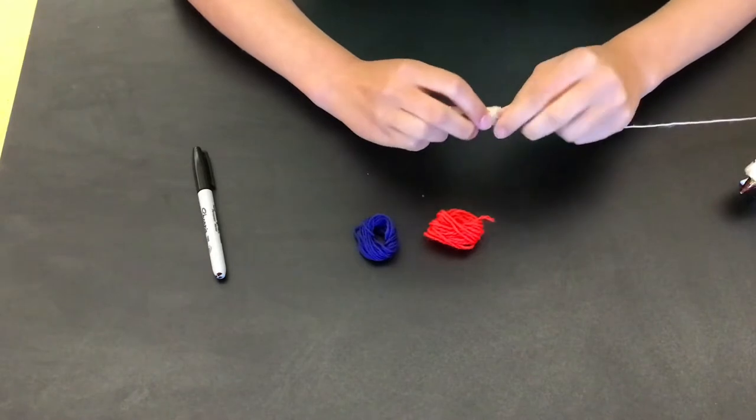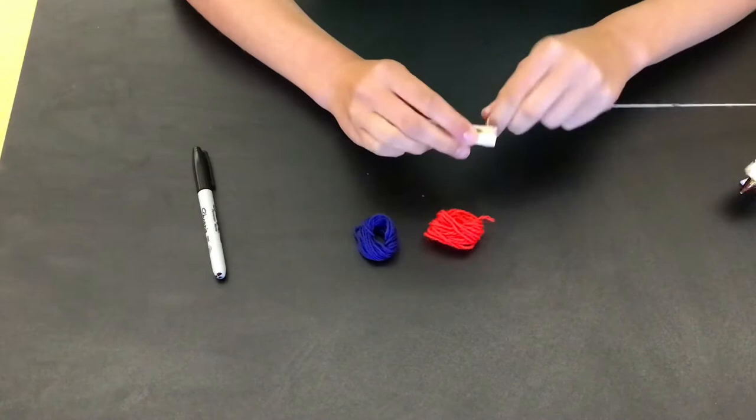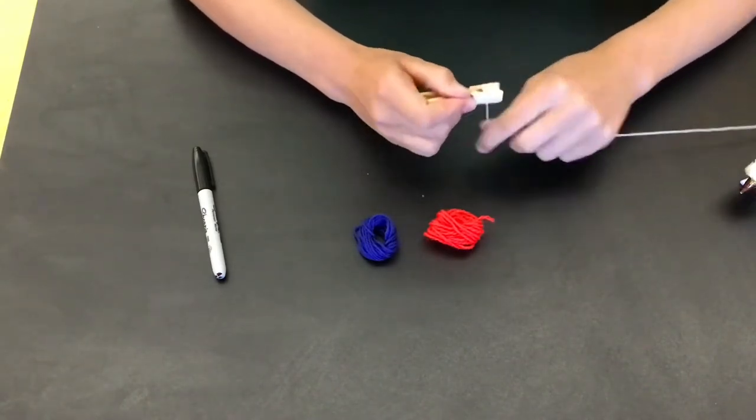So you're going to take your light thread and wrap it around the top of the clothespin. If you're having trouble, you can always glue the end, but here I didn't glue the end because I could just tuck it under the other string.